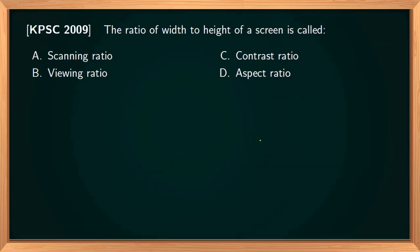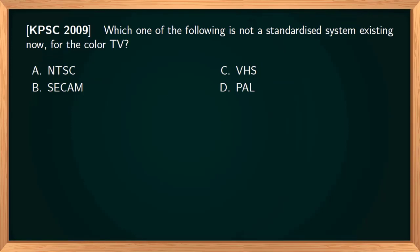The aspect ratio of a television screen is defined as the ratio of width to height of the screen. In television, the standard aspect ratio is 4:3.